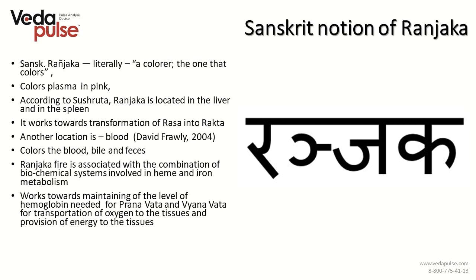The Sanskrit notion of Ranjaka means 'the one that colors.' Ranjaka works toward transformation of rasa into rakta. Rasa, being one of the dhatu, represents fluid substances of the body, including plasma containing nutrients taken from the gastrointestinal tract during digestion. Ranjaka helps transform rasa into rakta — blood cells. The malfunction of ranjaka inhibits the process of creation of blood cells. According to Sushruta Samhita, ranjaka is located in two organs: liver and spleen. Thus, liver and spleen disorder causes disruption of ranjaka.